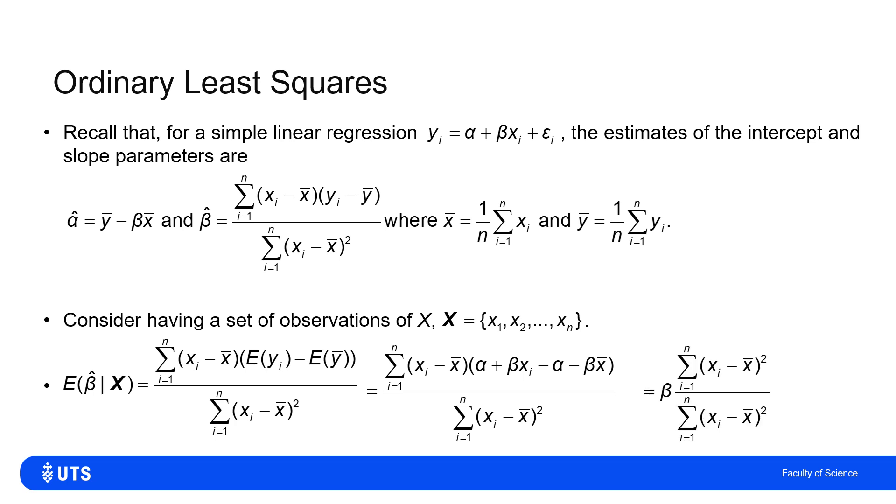So when I start to tidy that up, I can pull the β term out the front and I'll be left fairly obviously with β times—I think you can recognize the top and the bottom of that fraction are identical—so the expected value of the slope estimate β̂ given the sample x will be the true slope β.